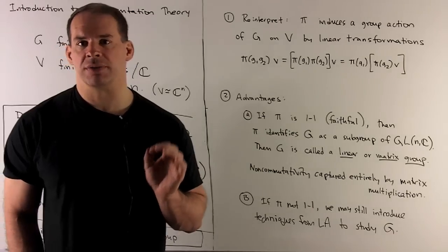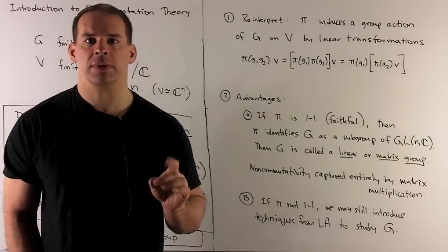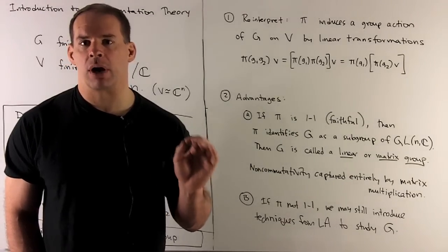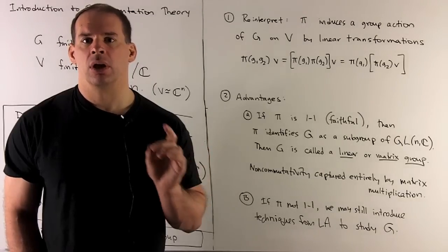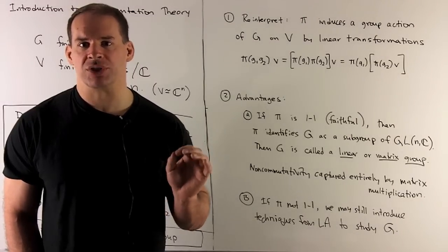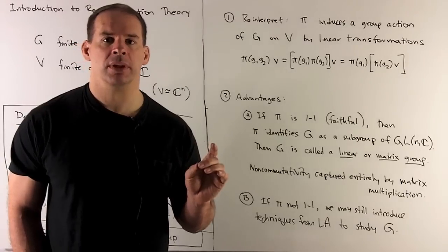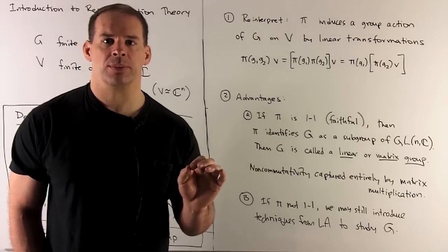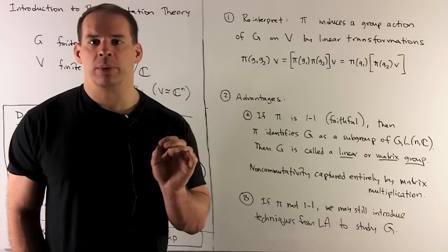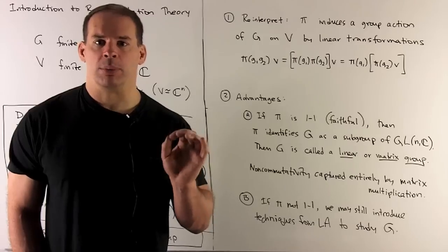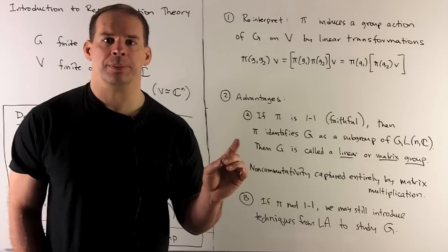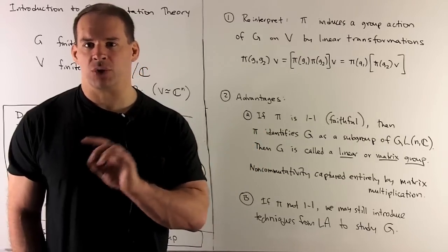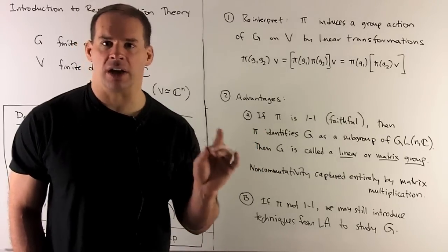What are the advantages of studying representations? First, if π is one-to-one, we have a faithful representation — our group G is being identified with a subgroup of GL(N,ℂ), so we're just looking at a group of matrices. Now, if I have a group that's noncommutative, that multiplication can be very complicated, but in this case the matrix multiplication catches all the noncommutativity.